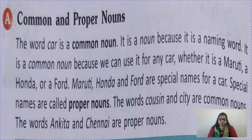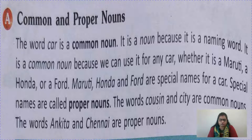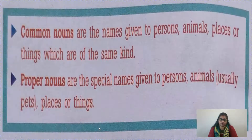The words 'cousin' and 'city' are common nouns. Suppose you have five cousins and you say 'I will meet my cousin tomorrow' — I won't know which cousin you mean, so it is a common noun. But when you say 'I am going to meet Ankita,' then I understand you are talking about Ankita — that is a proper noun. Similarly, 'city' is a common noun and 'Chennai' is a proper noun.